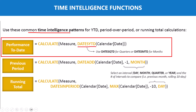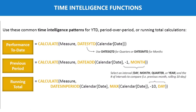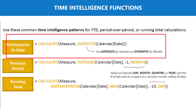The first pattern is 'performance to date', which is a very common time intelligence pattern. The formula uses a CALCULATE function, inside which you specify your measure, and then either DATESYTD, DATESMTD, or DATESQTD. You then pass the date column from your calendar table. This is the pattern we are going to explore.